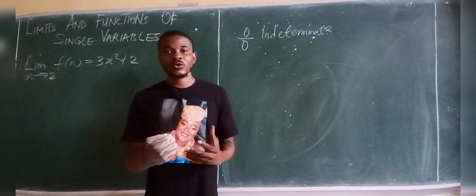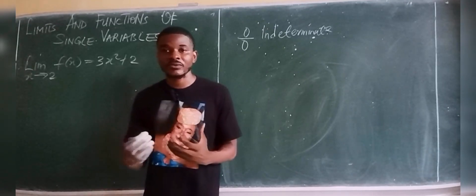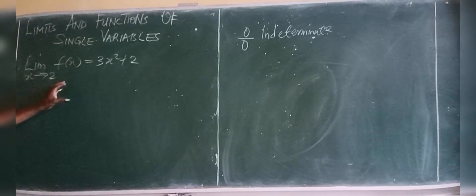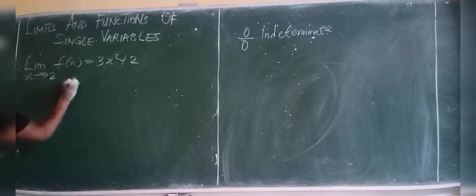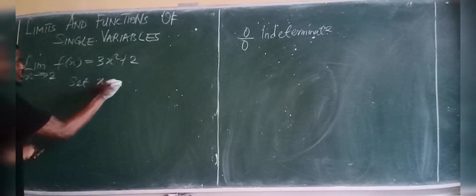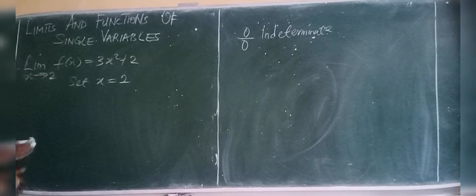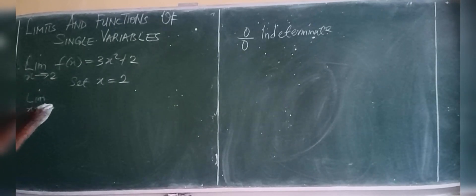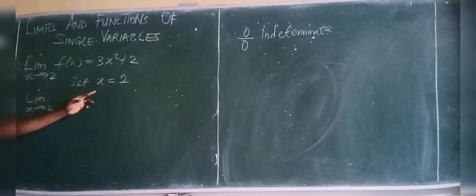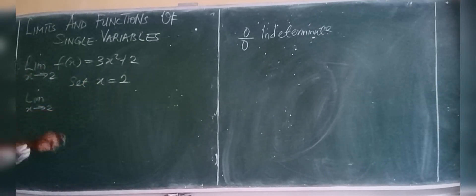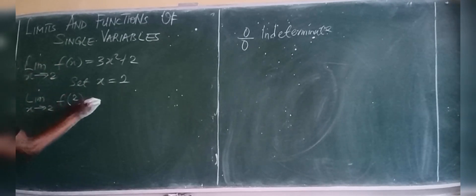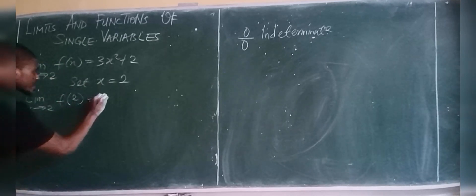Let's look at the first example: evaluate the limit as x approaches 2 of f(x) = 3x² + 2. By substitution, we simply set x equal to the point of the limit, which is 2. Wherever we see x, we put in the value 2, so this becomes f(2).